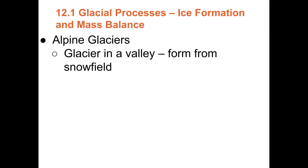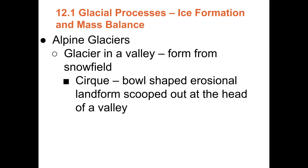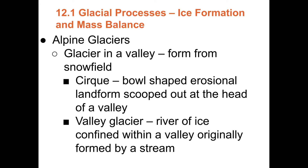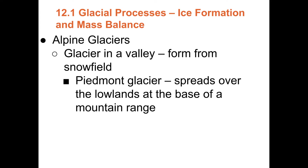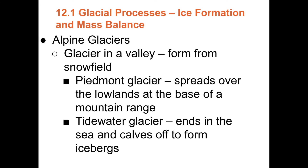Alpine glaciers flow down a valley and form from a snowfield, typically in a cirque — a bowl-shaped erosional landform at the head of the valley. As the alpine glacier flows downslope, it becomes a valley glacier. At the end, you can have a Piedmont glacier where the valley spreads out onto a large plain, like in Alaska. Another option is a tidewater glacier where the glacier flows into the ocean, and the end breaks off to make icebergs in a process called calving.